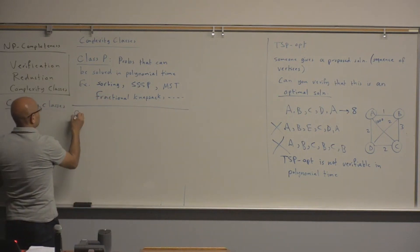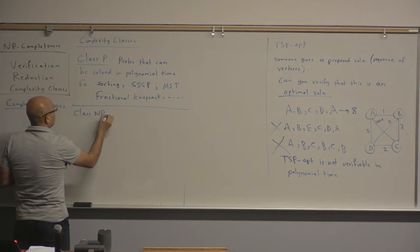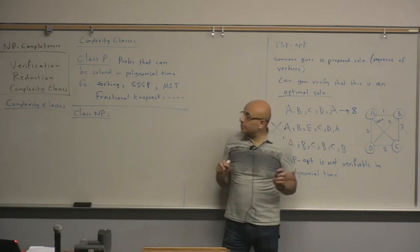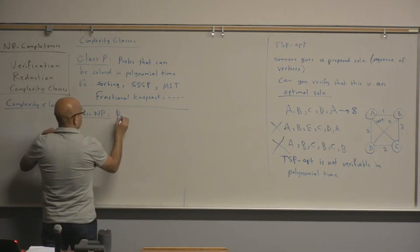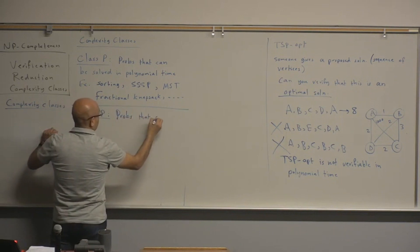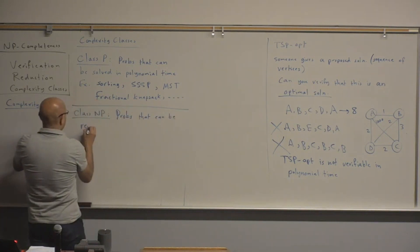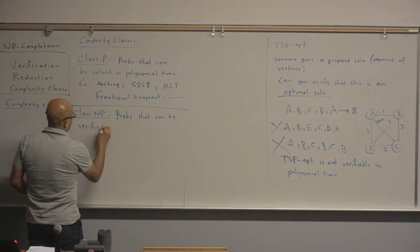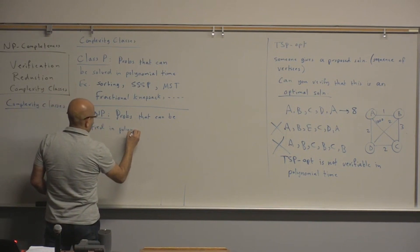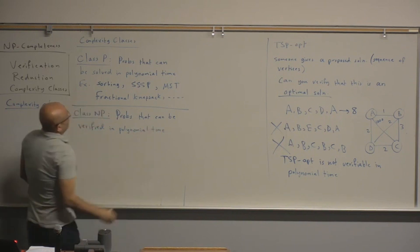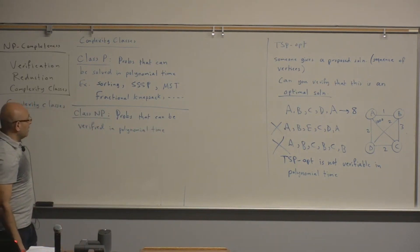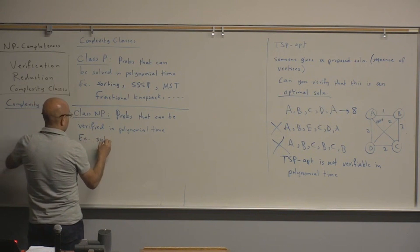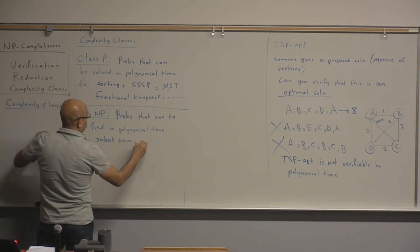The other class is class NP. Class NP is the set of problems that can be verified in polynomial time. Examples include subset sum and TSP decision.